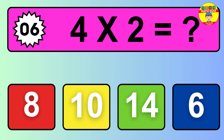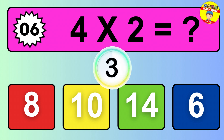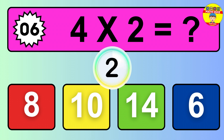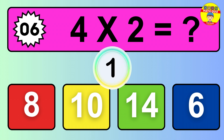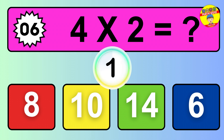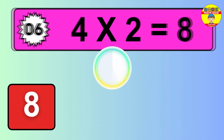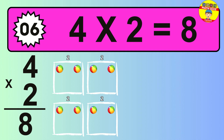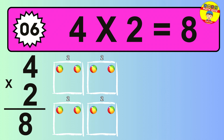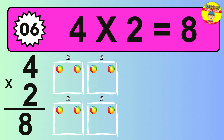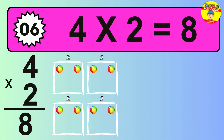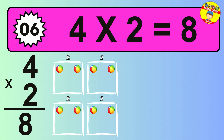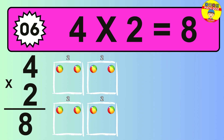Question 6. 4 times 2 equals what? The answer is 4 times 2 is 8. To calculate, we have 4 groups with 2 balls each one. So how many balls do we have? 8 balls.